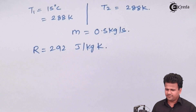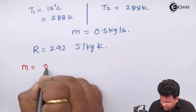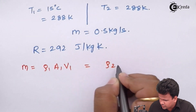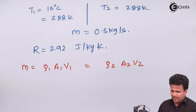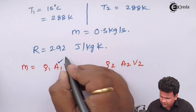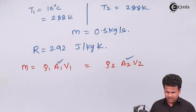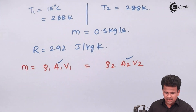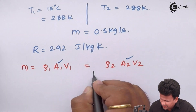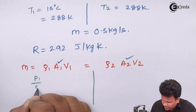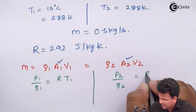Now let us evaluate the unknowns using this data. We know the continuity equation is m equals rho1 × a1 × v1, which equals rho2 × a2 × v2. We know a1 and a2 but not rho1 and rho2, so we use the isothermal condition: p / rho equals R × T, which is constant. Applying at inlet and outlet: p1/rho1 equals R × T1 and p2/rho2 equals R × T2.